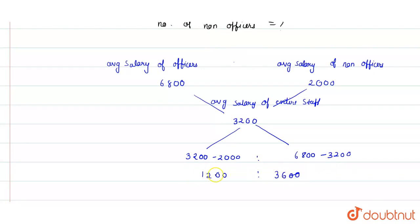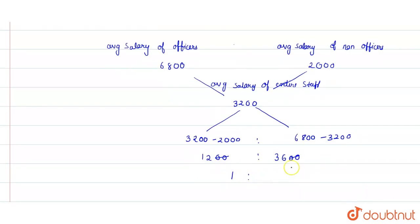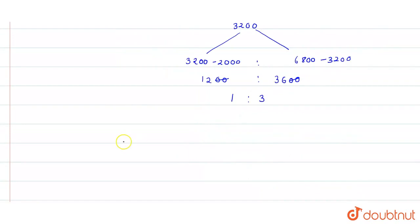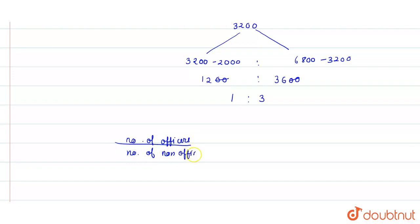So we simplify the ratio. Cancelling by 1200, we get 1200 to 3600, which simplifies to 1 to 3. Therefore, the number of officers to the number of non-officers is equal to 1 upon 3.